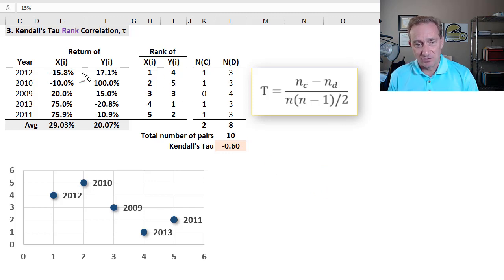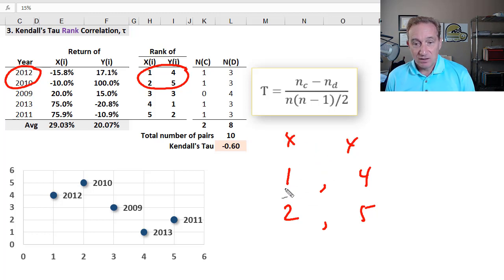So if I take these two pairs here, if I just pull them out, I have a one, and a four, and then a two, and a five, X and Y. Well, if we look at the X, the two is greater than the one, and the five is greater than the four. So this pair is concordant, because directionally, X and Y are going in the same direction.